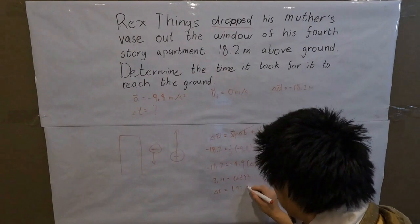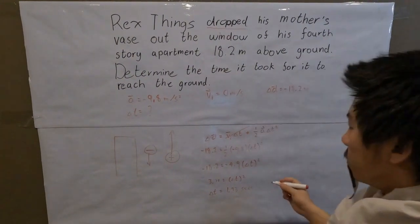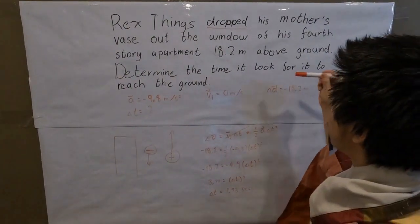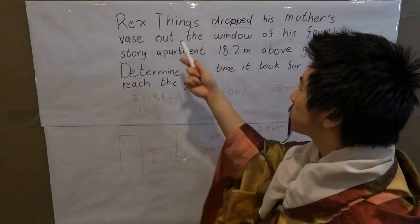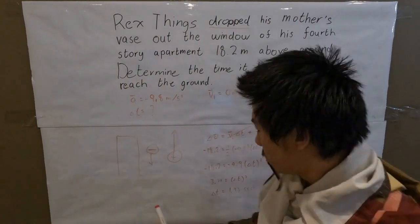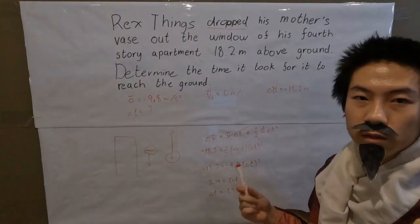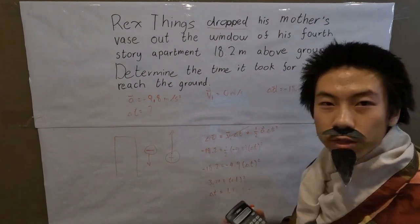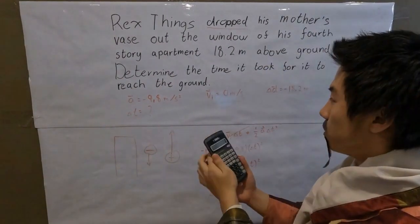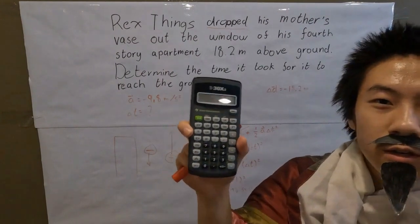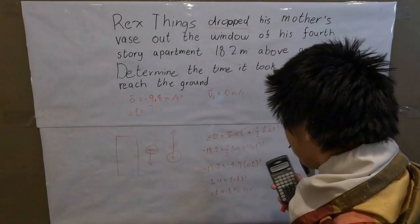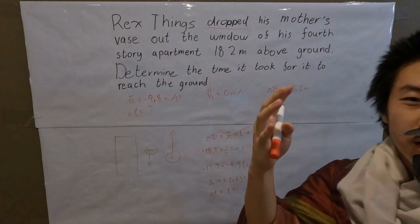Seconds. So it takes the vase 1.93 seconds to reach the ground and shatter. Honestly, Rex Things, you are a naughty boy. I can't believe it. And there you have it: the answer is 1.93 seconds. And it's all thanks to this magnificent tool. This is what makes this possible. So everybody, believe in this. Believe in the calculator. In Texas Instruments, and you will never fail. This is so wonderful. I can't believe it. This is so good.